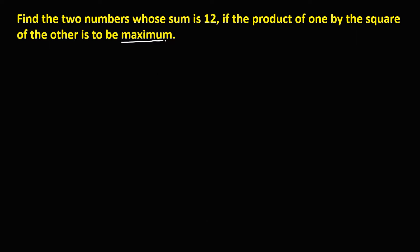To solve this problem, we first let x be the first number. Then since the sum is 12, therefore 12 minus x is the second number.